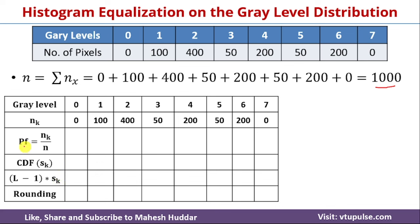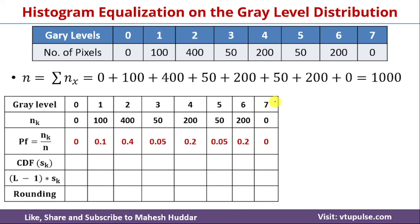First, we will calculate the probability of each gray level. The probability is calculated by the formula where nk is the number of pixels in each level divided by n, the total number of pixels. For gray level 0, we have 0 pixels, so 0 divided by 1000 equals 0. For gray level 1, we have 100 pixels, so 100 divided by 1000 equals 0.1. For level 2, we have 400 pixels, so 400 divided by 1000 equals 0.4. Similarly, we calculate the remaining probabilities, and they look something like this for each level.